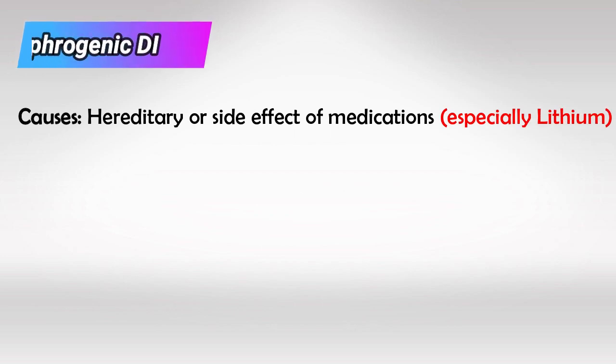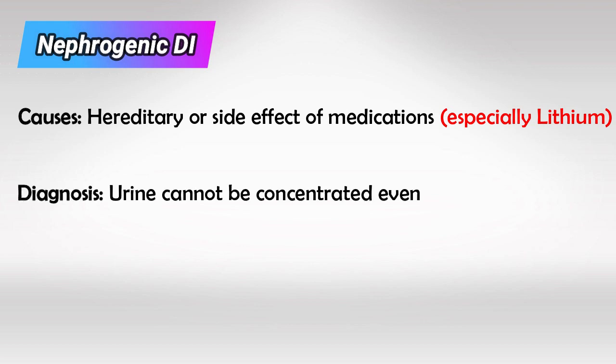The nephrogenic type is caused by damage to the receptor of ADH, which can be caused by hereditary receptor mutation or medications such as lithium. The diagnosis of the nephrogenic type is made when administration of ADH does not result in urine concentration.